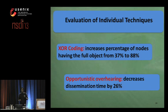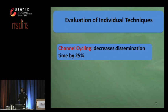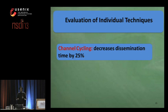Our technique of opportunistic overhearing decreases dissemination time by 26%, and similar results can be observed for channel cycling, which reduces dissemination time by 25%.